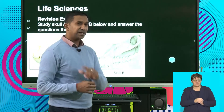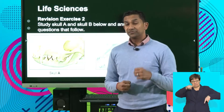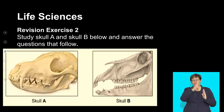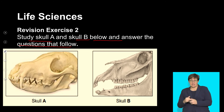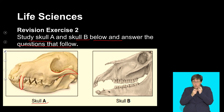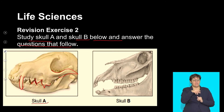Let's get back to when we discussed the adaptations of the jaw and teeth of different consumers for their mode of nutrition. Study skull A and skull B and answer the questions that follow. Skull A clearly indicates large canines, very well-developed cheekbones, and triangular-shaped teeth on both the upper and lower jaw. This is significant in understanding the mode of nutrition — this particular skull would be that of a predator or carnivore, as indicated by the large canines.